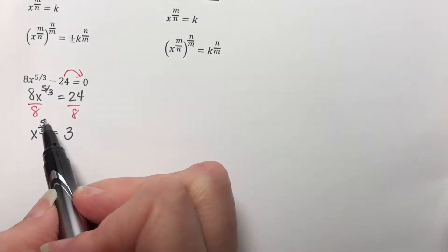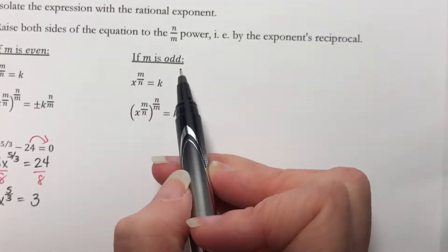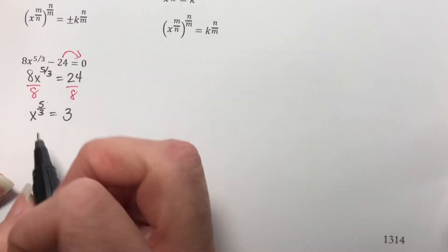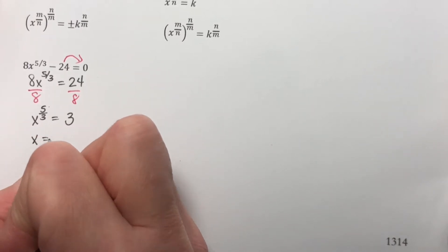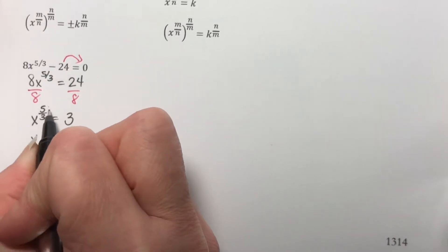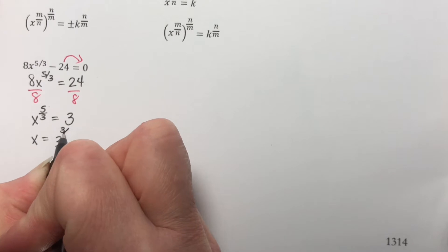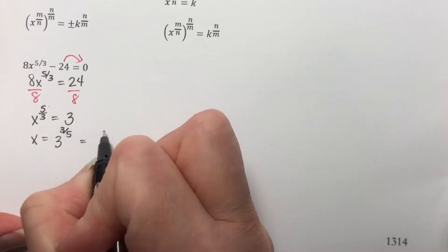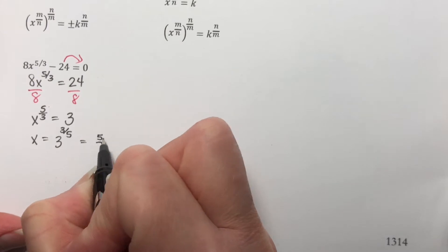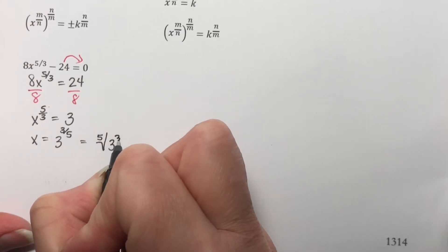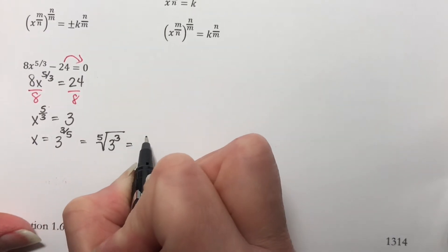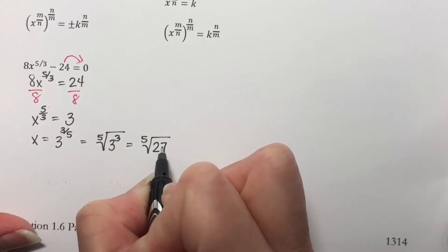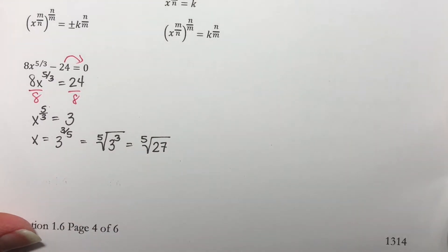The numerator here is odd, so I do not have to worry about a plus or minus. I get to write x equals 3 to the reciprocal power, which is 3/5. So this means it's the 5th root of 3 cubed, which is the 5th root of 27. And that's your answer.